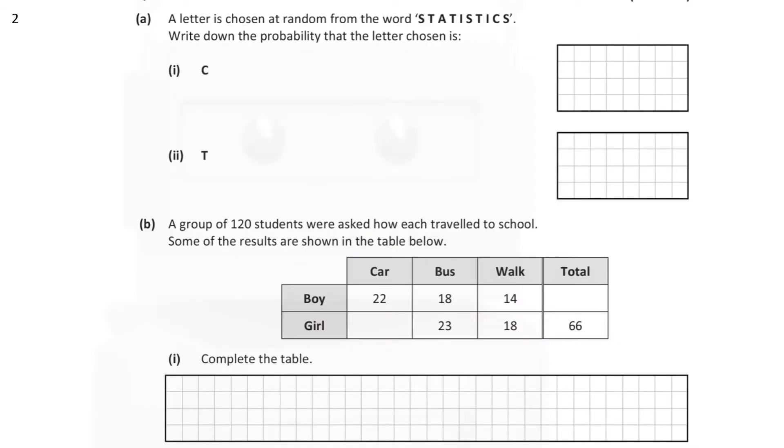Now, question 2. Some probability questions here. Part A. A letter is chosen at random from the word statistics. Write down the probability that the letter chosen is statistics. So statistics has 10 letters.